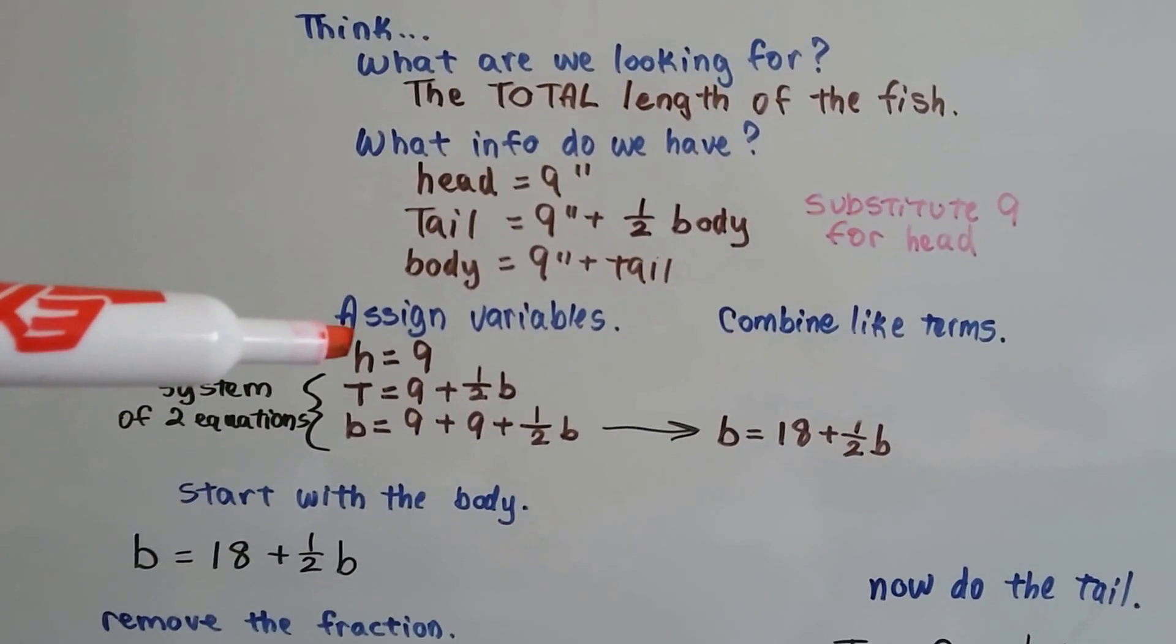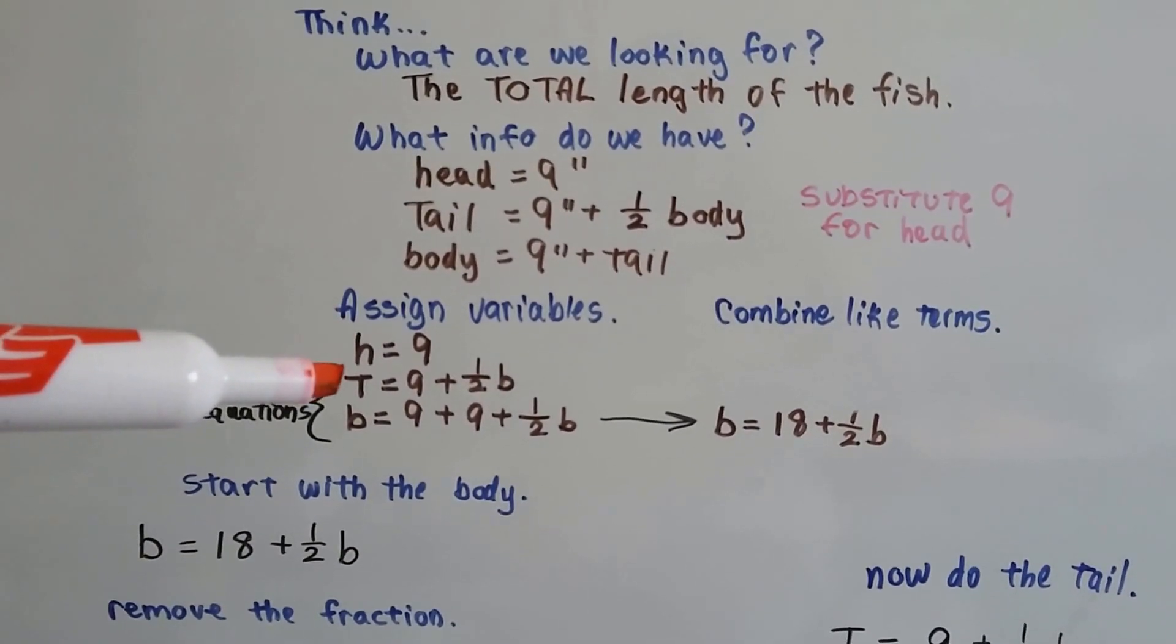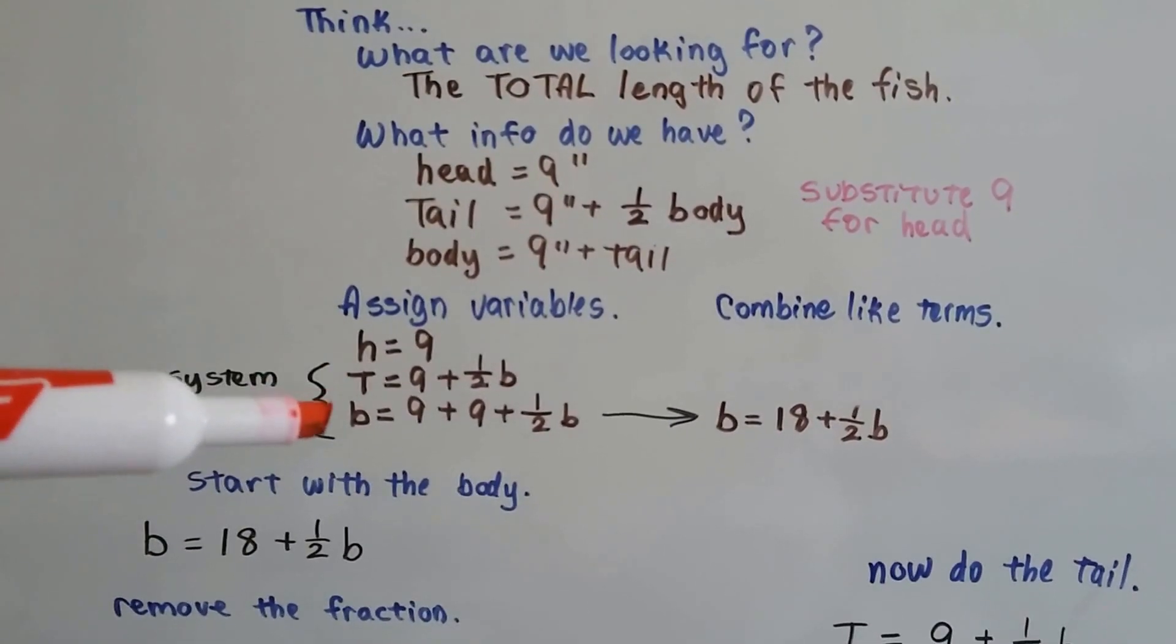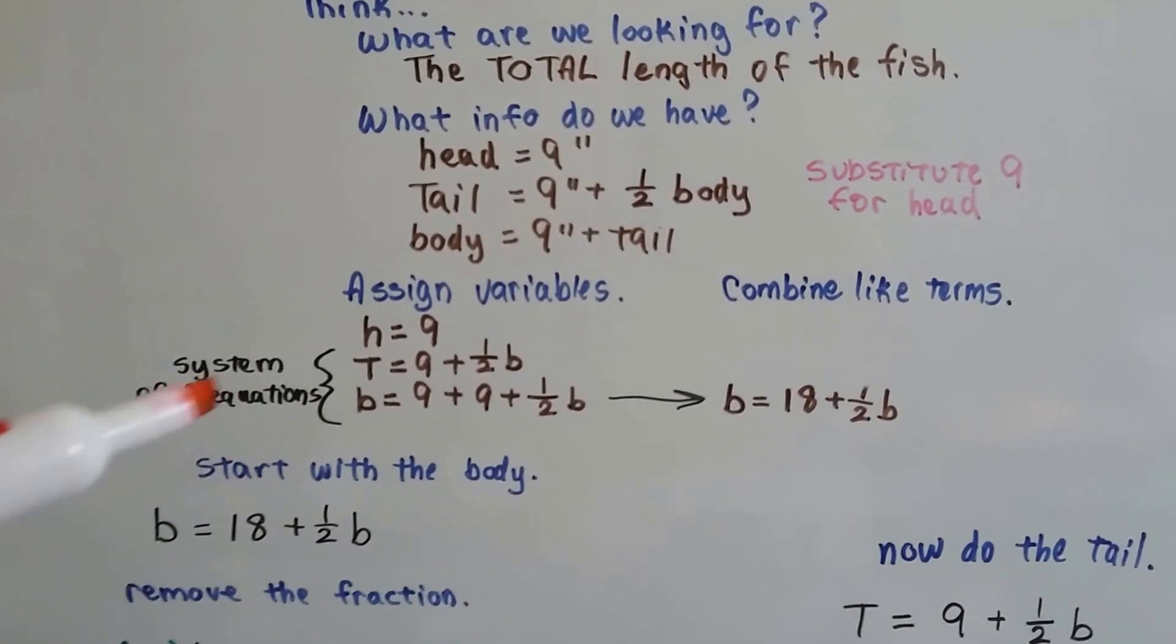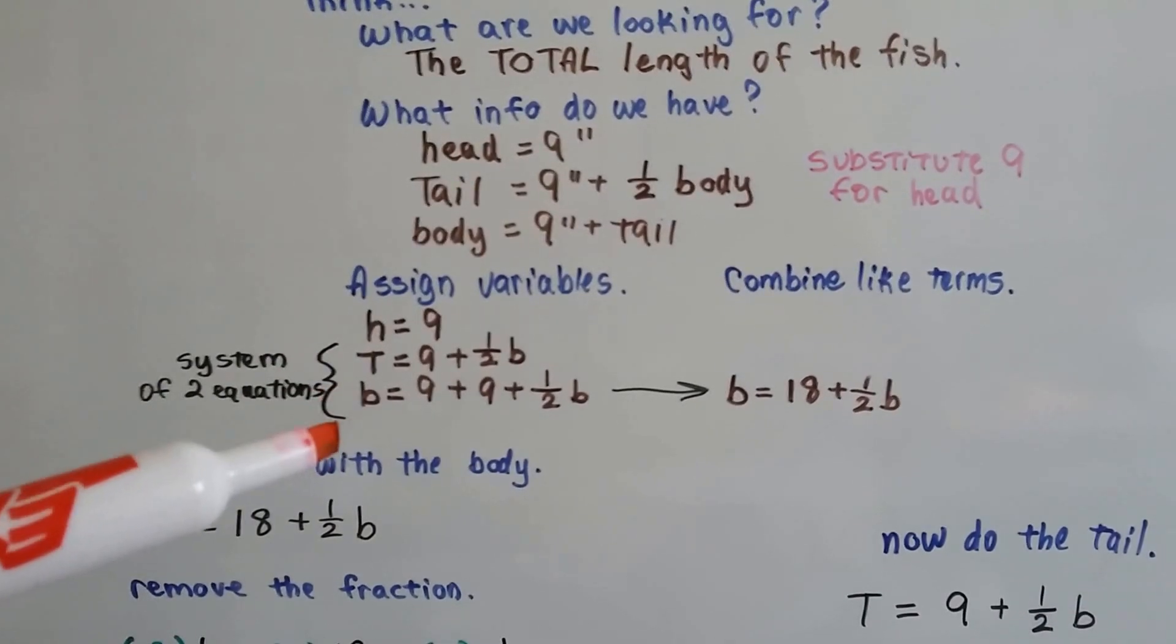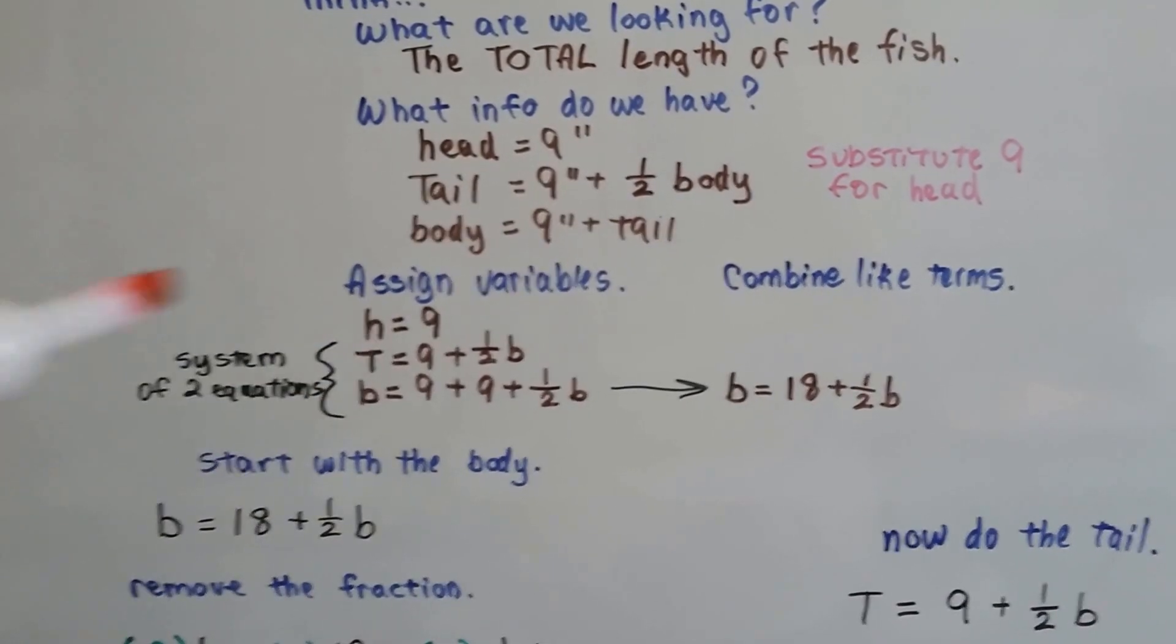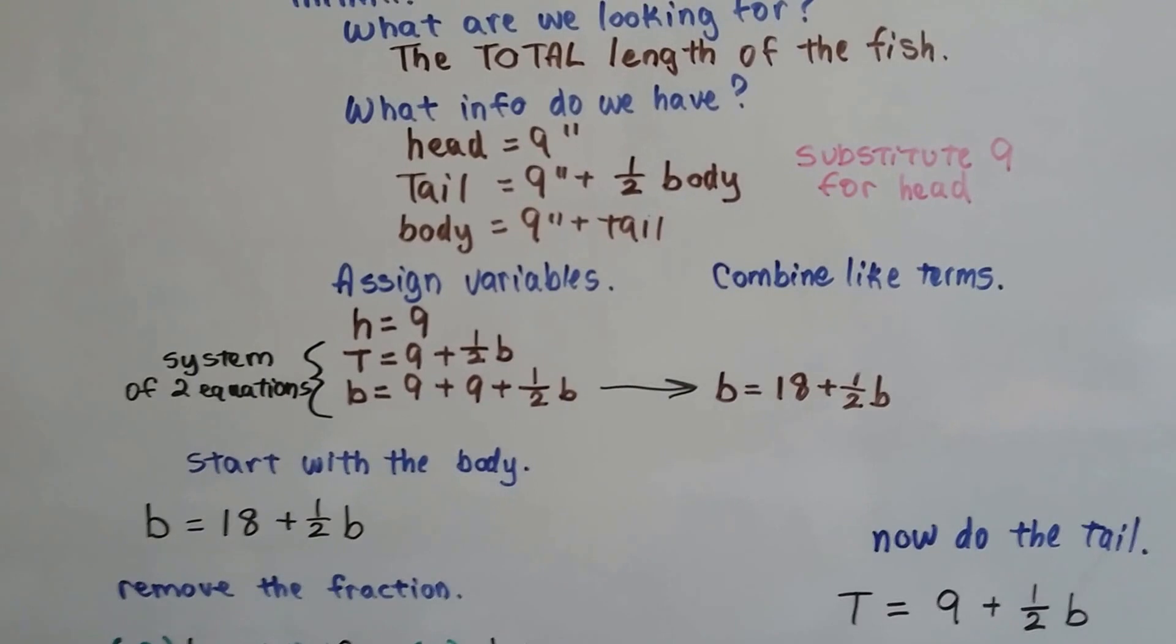We've assigned the variables, h for head is nine, t for tail is nine plus half b, and body is b, which is nine plus nine plus the half b. This is our system of two equations right here. It's not three equations because we know the head is nine. We can substitute that in later on.